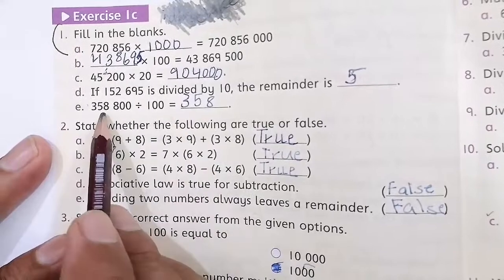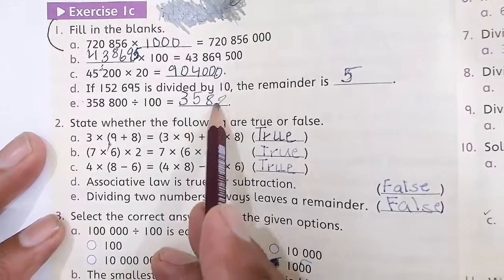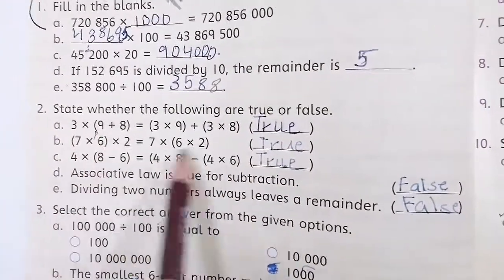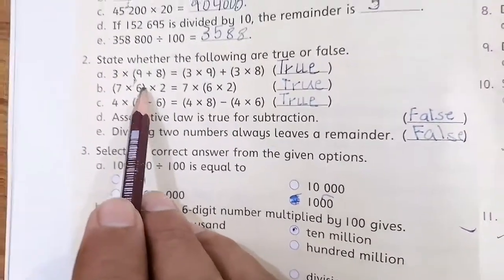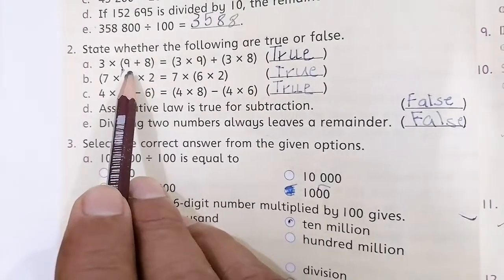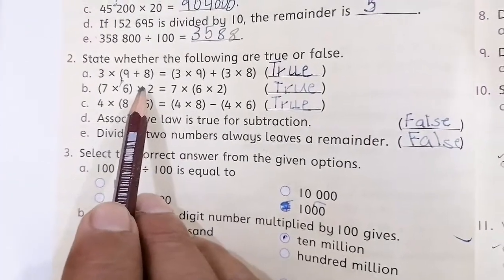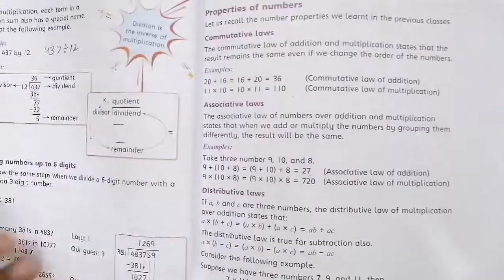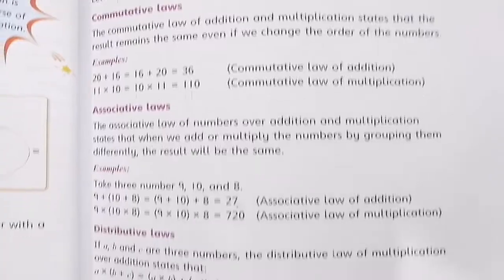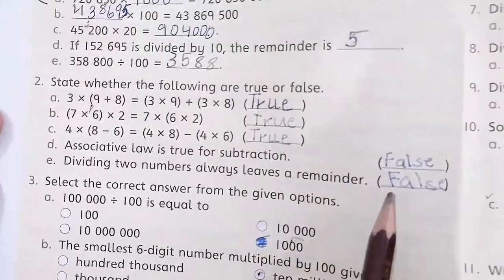Question 2: State whether the following are true or false. You can see the associative property and commutative property. First one is true, second one is true, third one is true, last two are false.